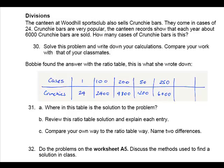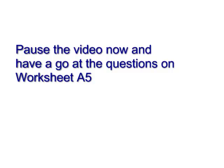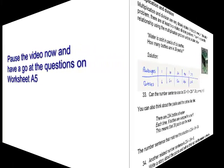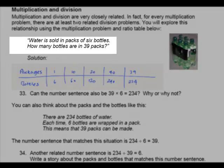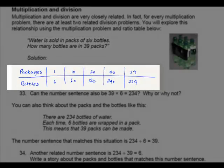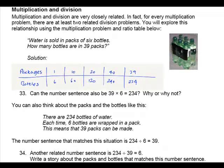Do the problems on worksheet A5. In this final section we're making the connection between multiplication and division. We've got a statement about the context, a student's ratio table solution, and then the formal mathematical sentence for that calculation. It's quite interesting to ask students what they think '39 times 6' means — do they think it means 39 lots of 6 or 6 lots of 39? Depending on which they think, they can relate it to the table, where you're actually seeing 39 lots of 6.